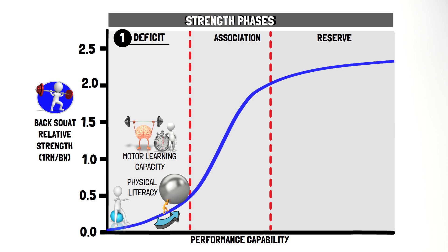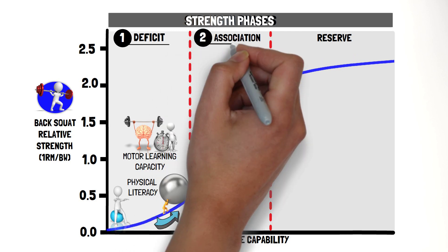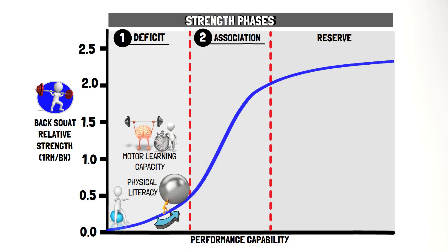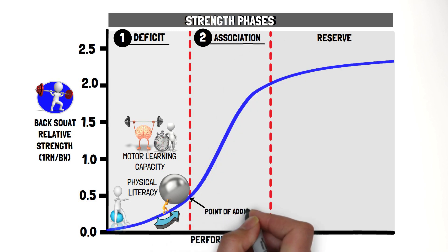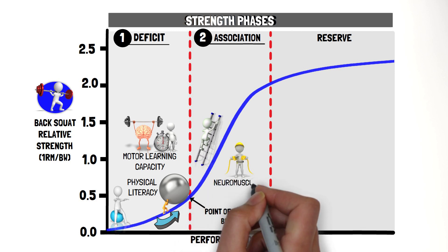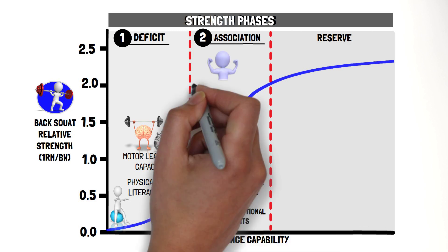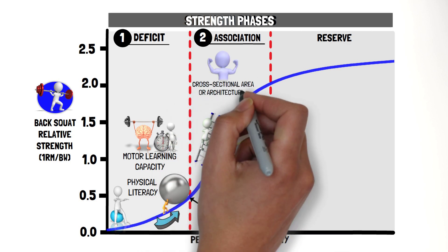As they get stronger, they will then enter the strength association phase, where increases in strength now often directly translate to improved performance. This phase is characterised by a nearly linear relationship between relative strength and performance capability. The duration of this phase may be based primarily on two physiological mechanisms, including neuromuscular adaptations and muscle cross-sectional area or architectural changes that occur as a result of regular strength training.